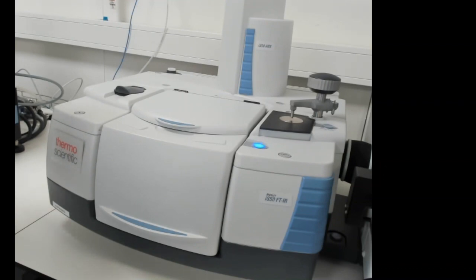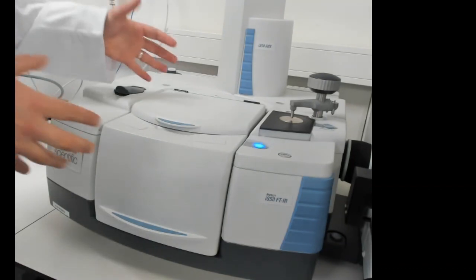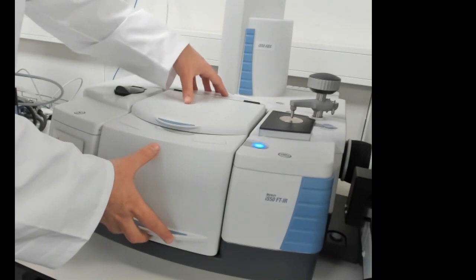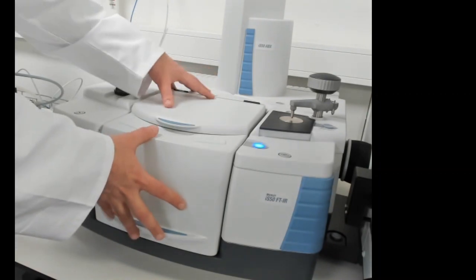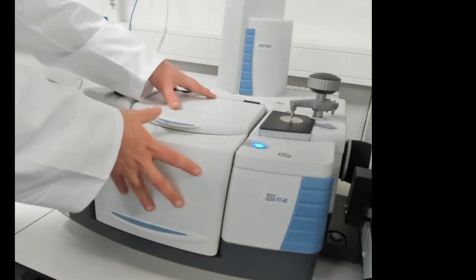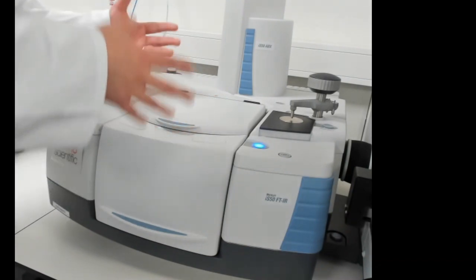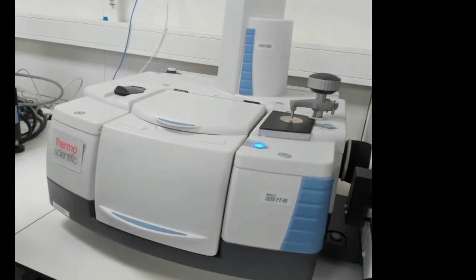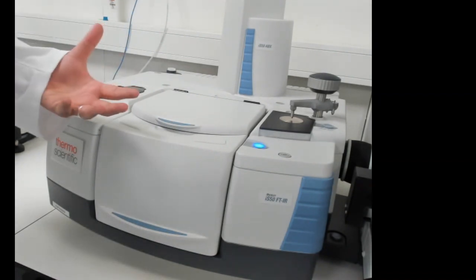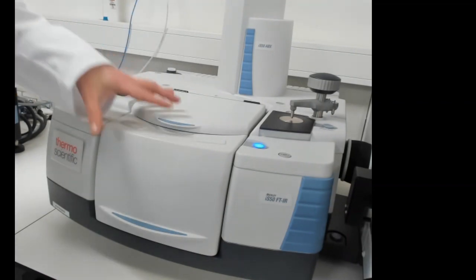The FT-RAMAN sample compartment fits into the main sample compartment which means that you can just basically remove the cover of the main sample compartment, slide in the FT-RAMAN and then you're ready to go for FT-RAMAN measurement which means that you can get complementary RAMAN and infrared measurements with one instrument.